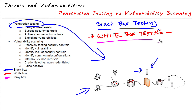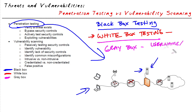Last but not least, we have gray box, which is somewhere between white and black box testing. With gray box testing, perhaps the tester was given a username and password, or a general overview of how the system works, but not the details — for example, not the source code for the application, or the detailed devices in the network infrastructure. So with gray box, they have some information, but not all information.